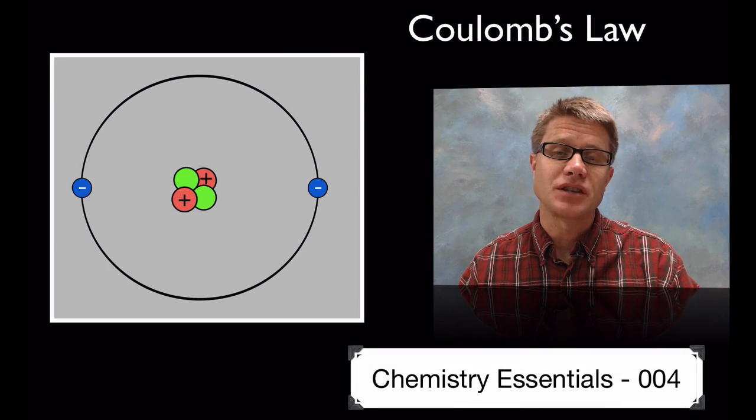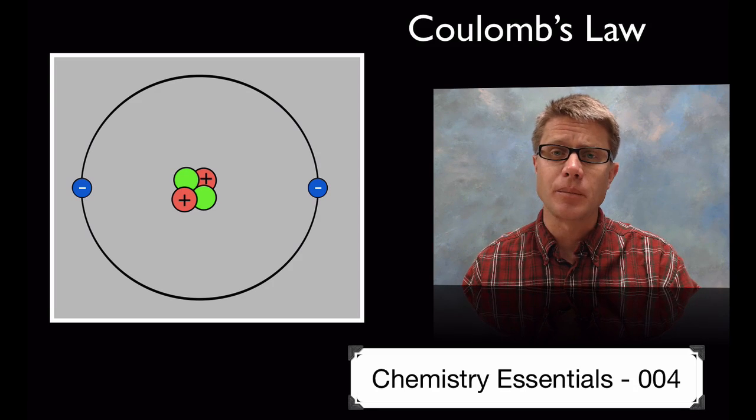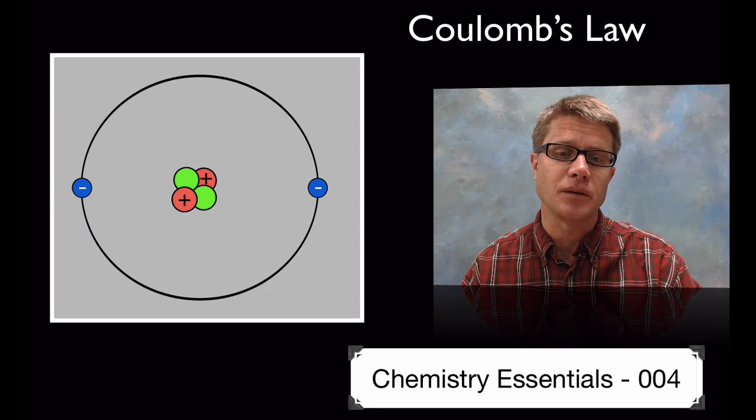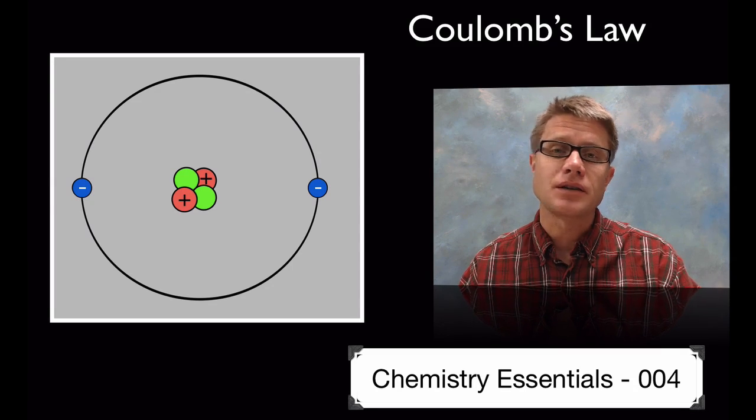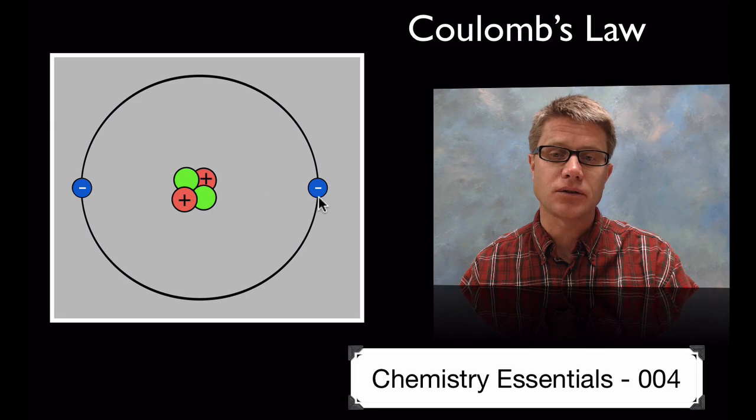Hi, it's Mr. Andersen and this is chemistry essentials video 4. It's on Coulomb's law which is a physics law but also has huge ramifications when it comes to chemistry. And so if we look at a simple atom, this right here is helium. It's going to have two protons, two neutrons and two electrons.